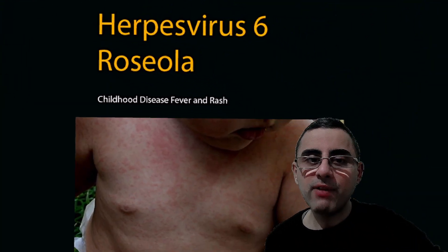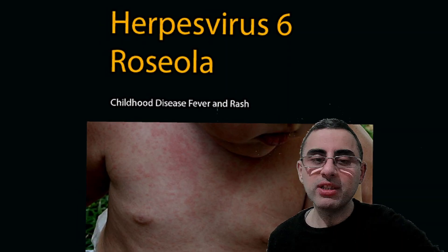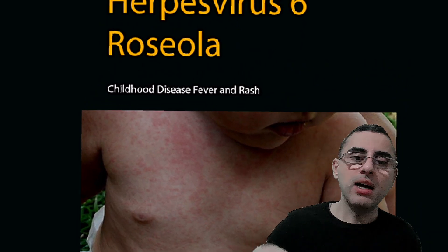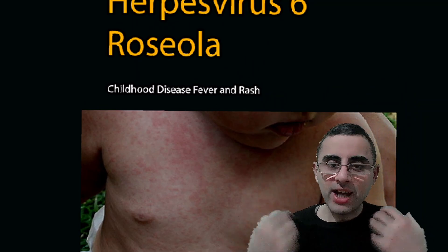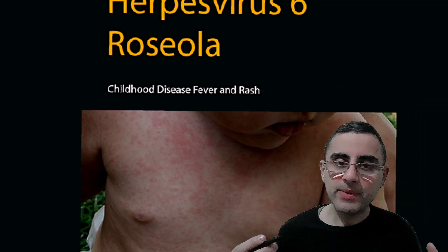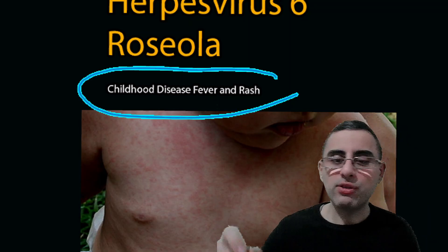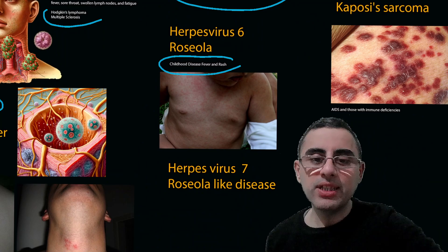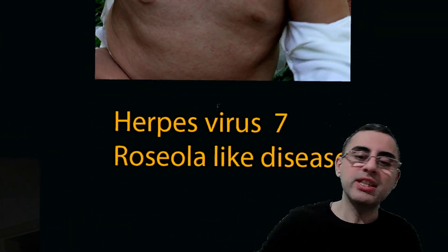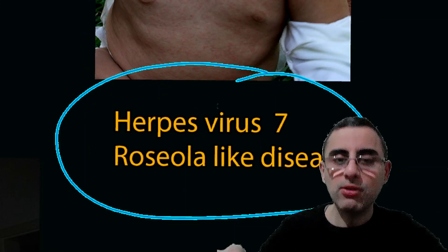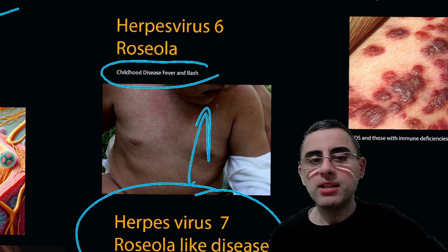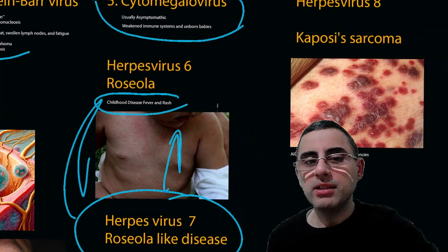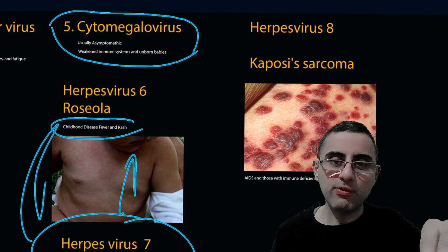The sixth is herpes virus 6, which causes roseola. Roseola is a childhood disease that manifests as a rash and fever, and it resolves on its own. The seventh is herpes virus 7, which looks like herpes virus 6 and also causes roseola-like symptoms. There is no specific treatment for these diseases.